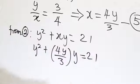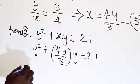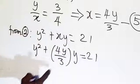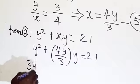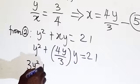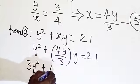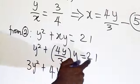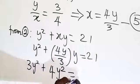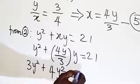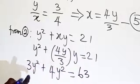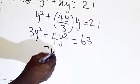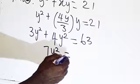Substituting x = 4y/3 into y squared plus (4y/3)·y equals 21. Multiply everything by 3: 3y squared plus 4y squared equals 63.